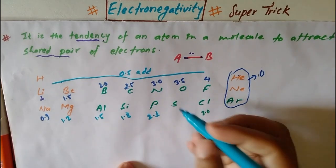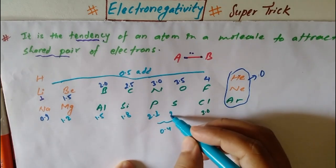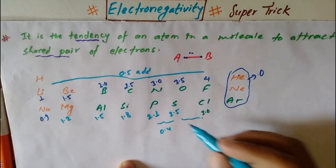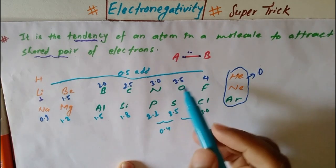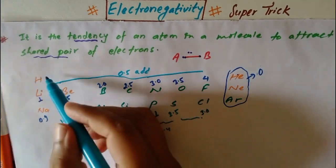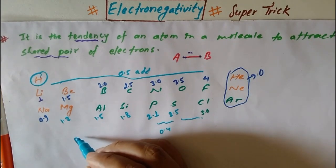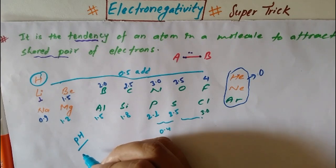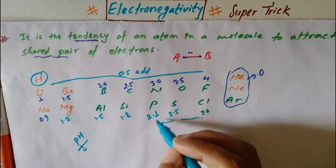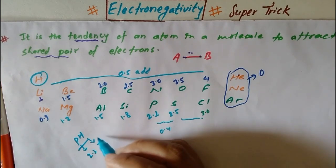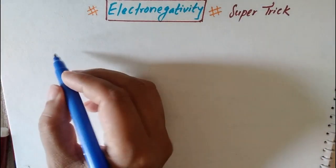Continuing: silicon is 1.8, phosphorus is 2.1, sulfur is 2.5, chlorine is 3.0. Phosphorus electronegativity is 2.1 and hydrogen electronegativity is also 2.1 — they are equal. Electronegativity of chlorine is 3.0.